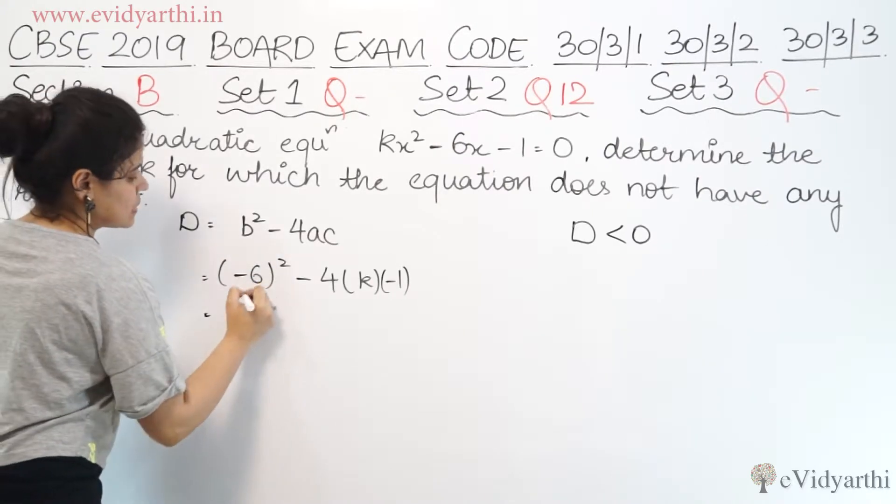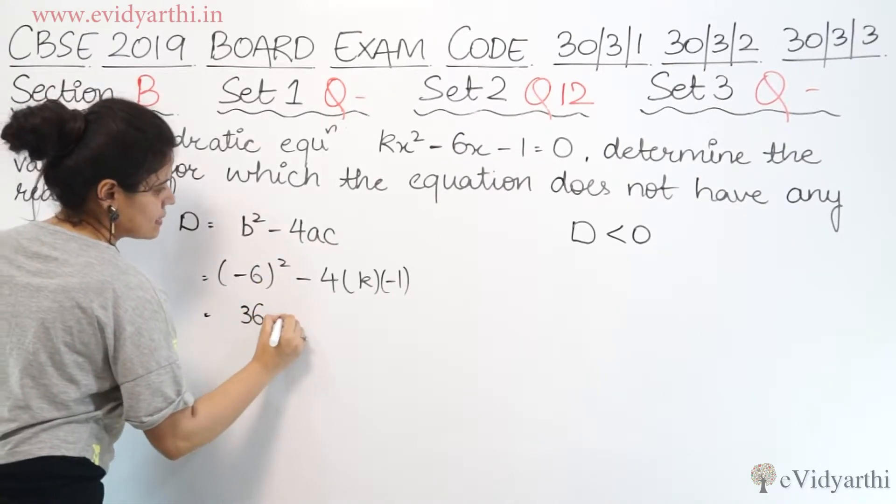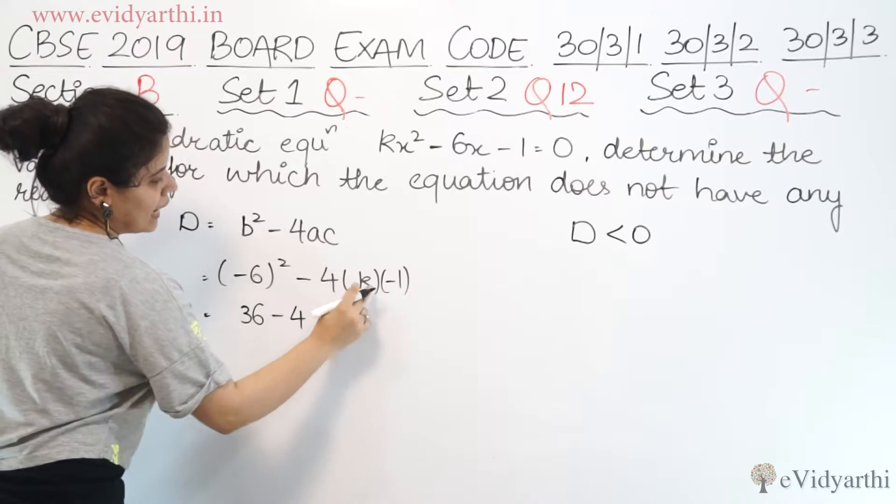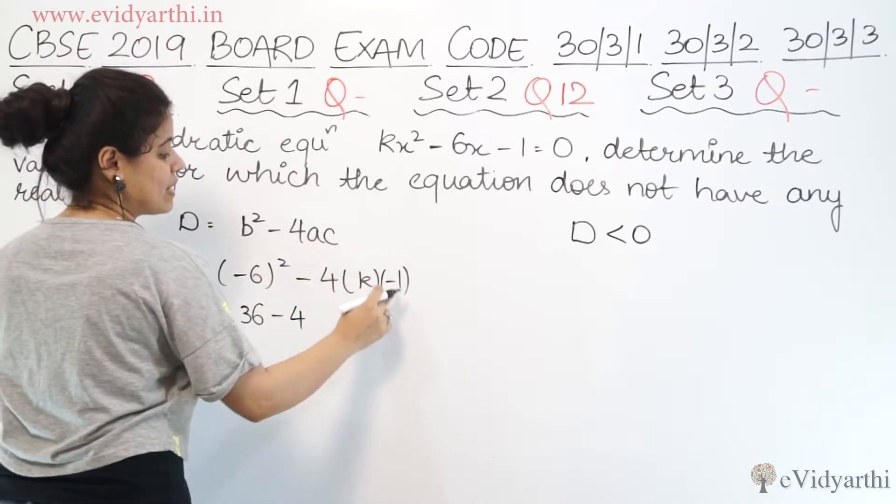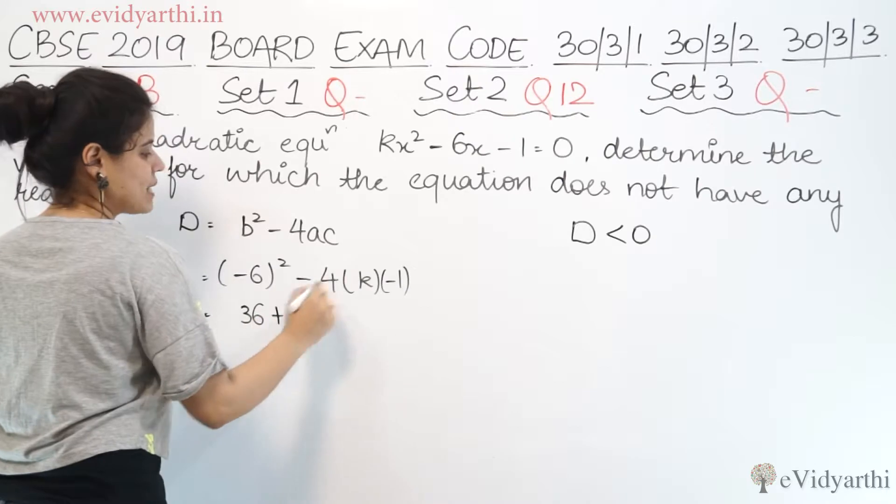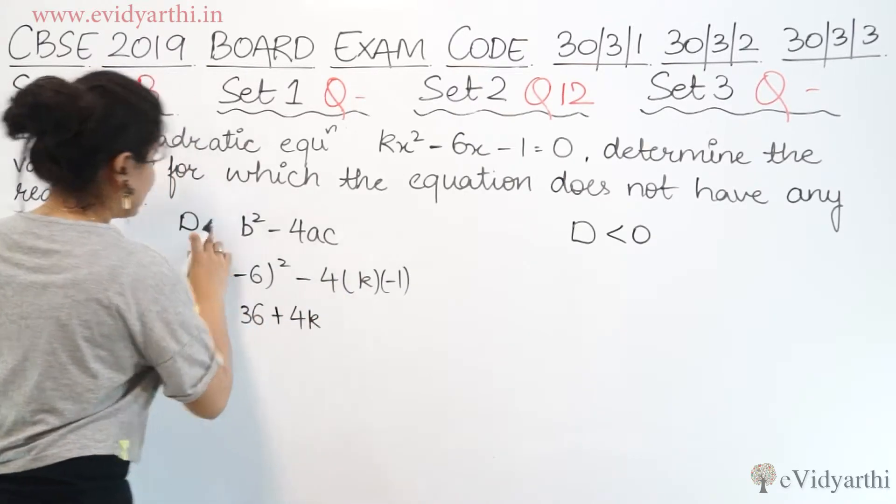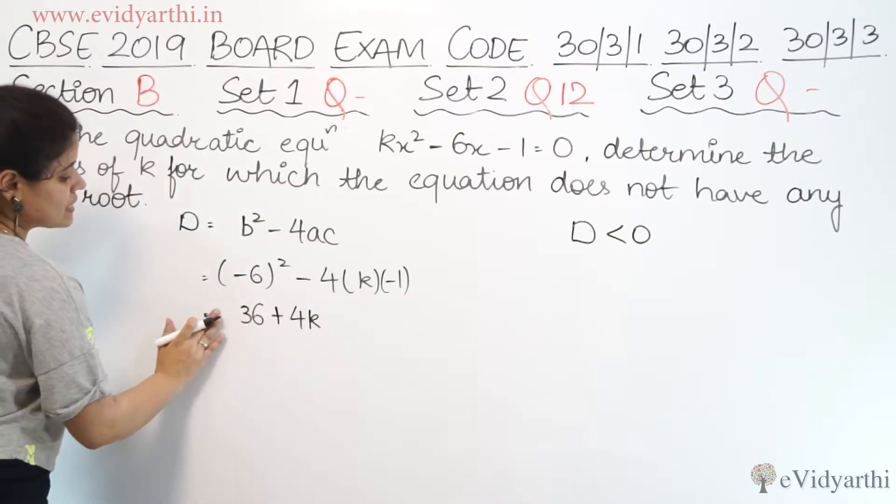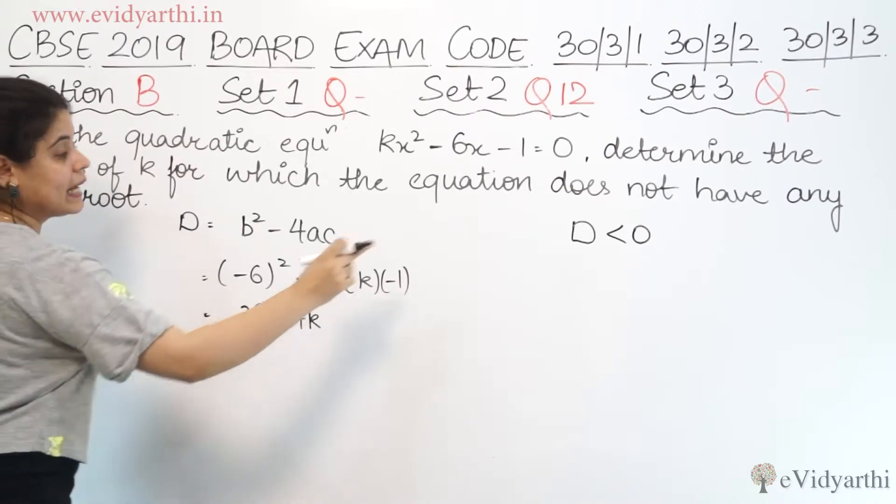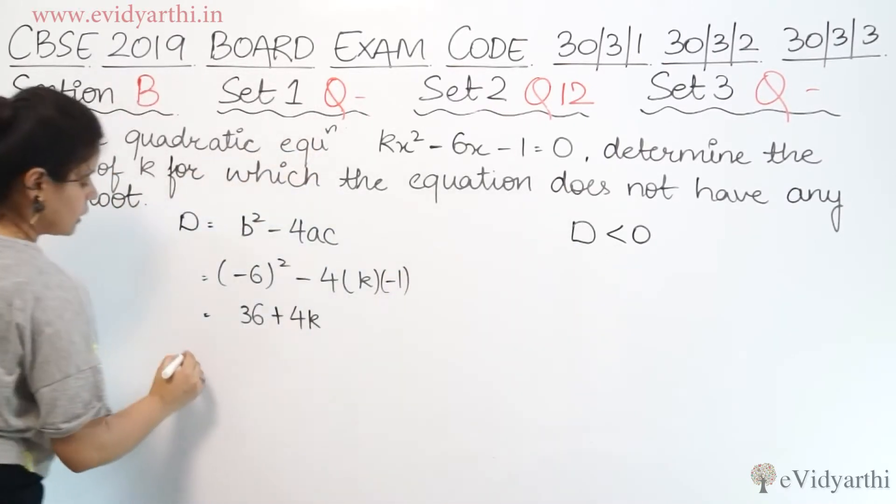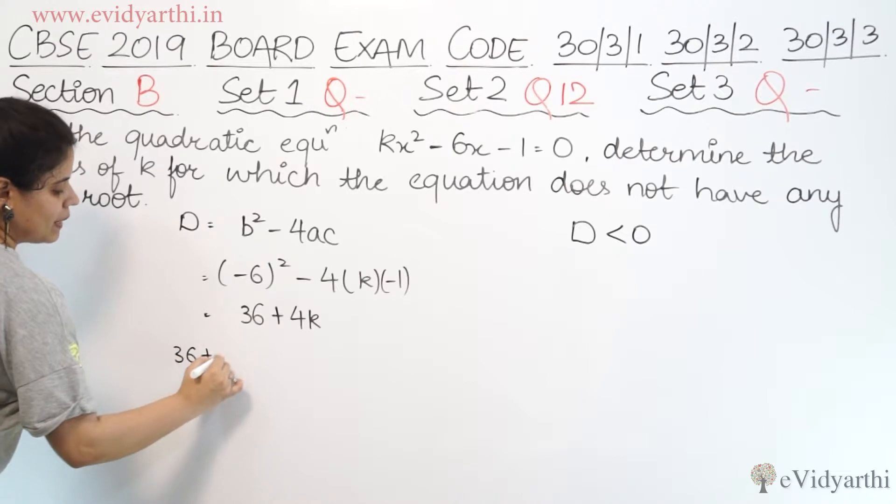So now minus 6 ka square, 6 into 6 is 36 minus 4. Here we have k and minus 1, so 4 into 1 is 4, minus minus plus. So we get 36 plus 4k.